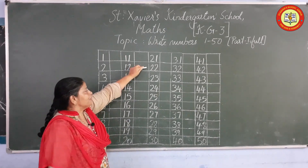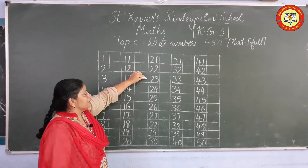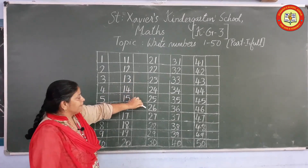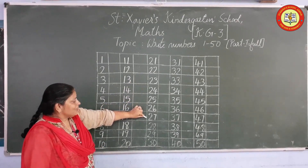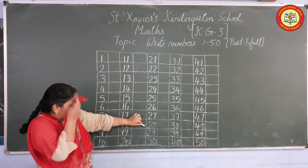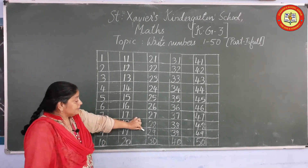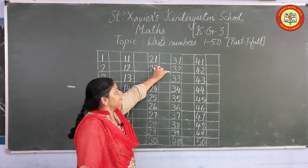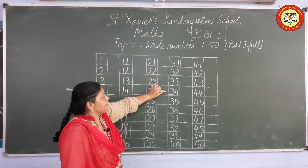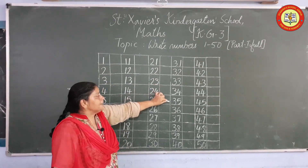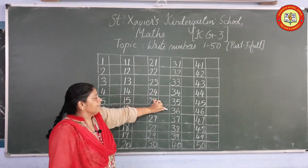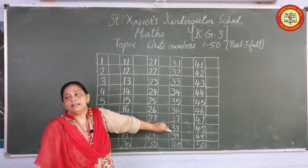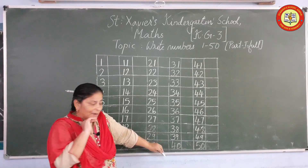21, 22, 23, 24, 25, 26, 27, 28, 29, 30, 31, 32, 33, 34, 35, 36, 37, 38, 39, 40.